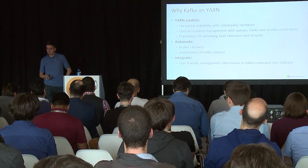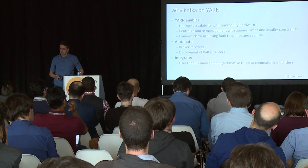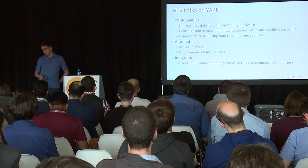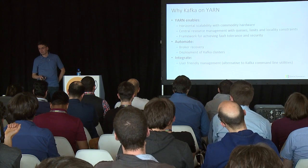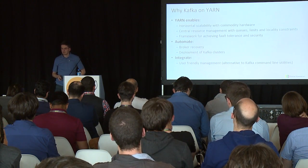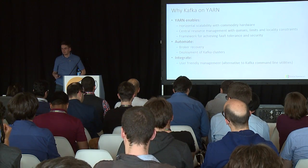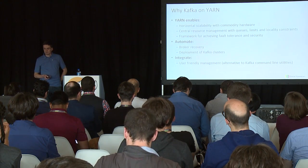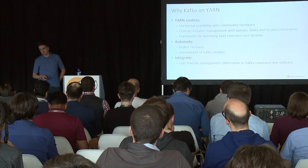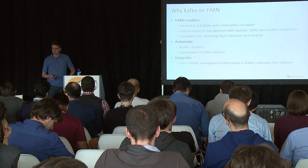Why Kafka on Yarn? Yarn gives us horizontal scalability on commodity hardware and provides central resource management with queues, limits, and locality constraints. It also provides the framework for achieving fault tolerance and security. When you write your Yarn application master, you are notified when a process fails, you can allocate a new container, and bring back whatever you need. That gives us the toolset to automate broker recovery. With Yarn resource localization, we can also deploy Kafka to clusters initially and auto-configure it.